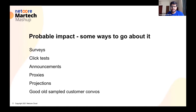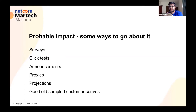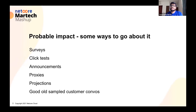Some of the ways you can go about estimating probable impact are simpler stuff — these are not rocket science. Surveys: your marketing team can run surveys. You can actually have announcements on your landing page for a few users saying, hey, if we're doing this, would you be interested? You can look at proxies. You can do some projections. What we did at Yovil when we launched this feature was something called a click test.